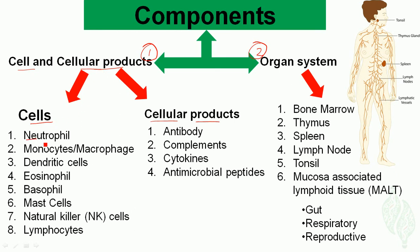In the cell part, we have the neutrophil, the monocyte and macrophages, the dendritic cell, the eosinophil, the basophil, the mast cell, natural killer cells, and the lymphocyte.